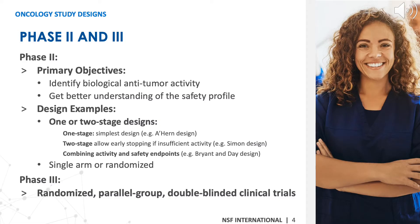Moving on to phase 2 and 3 designs, there are options of one or two-stage designs. In a two-stage design, patients are divided into two groups or stages, and at the completion of the first stage, an interim analysis is planned to determine if the second stage should be conducted. The Simon two-stage design allows flexibility regarding null and alternative hypotheses, which also allows stopping for futility. The Bryant and Day design incorporates toxicity considerations into the design of two-stage phase 2 clinical trials.